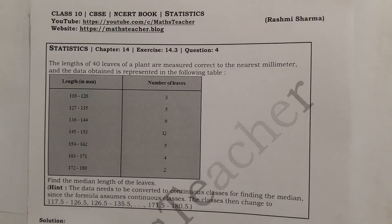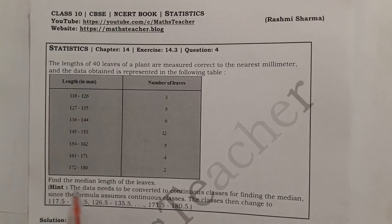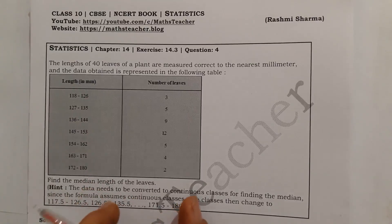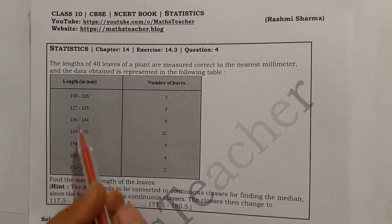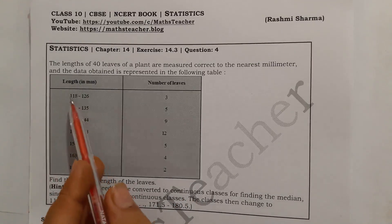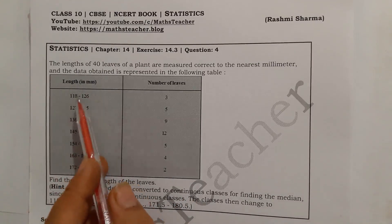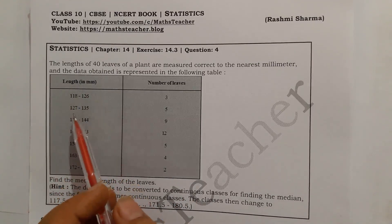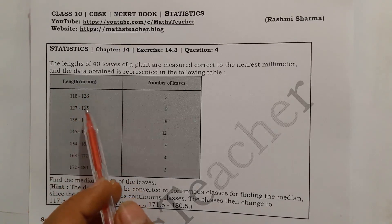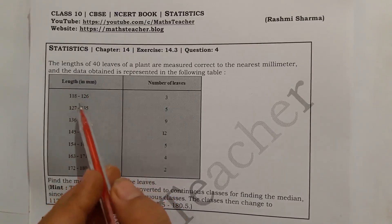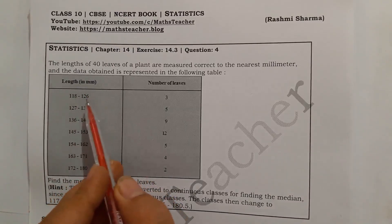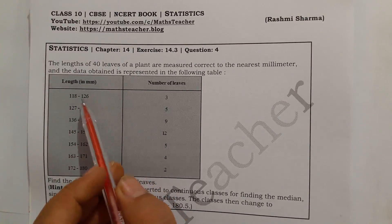We have to find the median length of the leaves. Now if you look at the question, the data is in inclusive form — that means it is in discontinuous form, not continuous form. That is how we are asked to do this question.